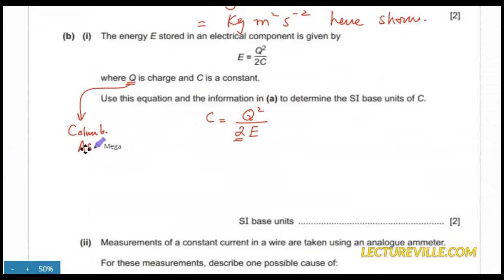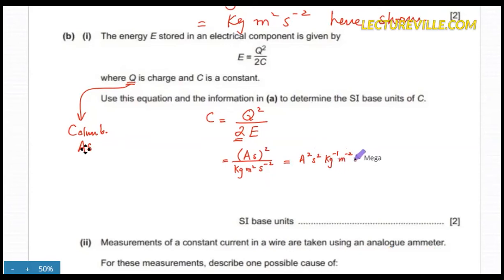Ampere second, so what you should do is ampere second squared divided by kg meter squared per second squared. Remember, we found this unit in the previous part. Now I want to shift everything from the numerator to denominator. It will become A squared S squared kg minus one meter minus two S plus two.